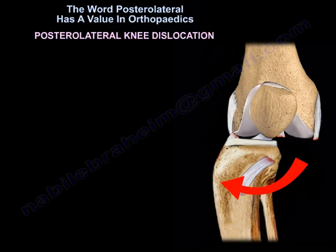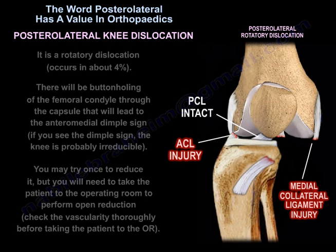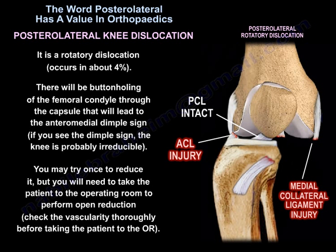The posterolateral knee dislocation is a rotatory dislocation, occurring in about 4% of cases. There will be button-holing of the femoral condyle through the capsule, leading to the anteromedial dimple sign. If you see the dimple sign in a knee dislocation, the knee is probably irreducible. You may try once to reduce it, but you will need to take the patient to the operating room for open reduction. However, you must check the vascularity thoroughly before taking the patient to the OR.